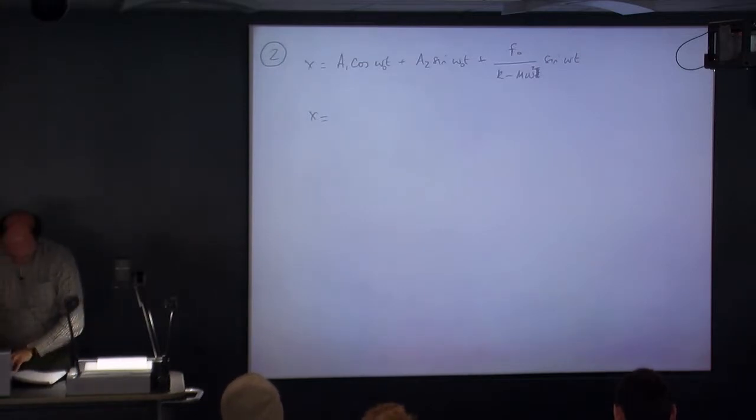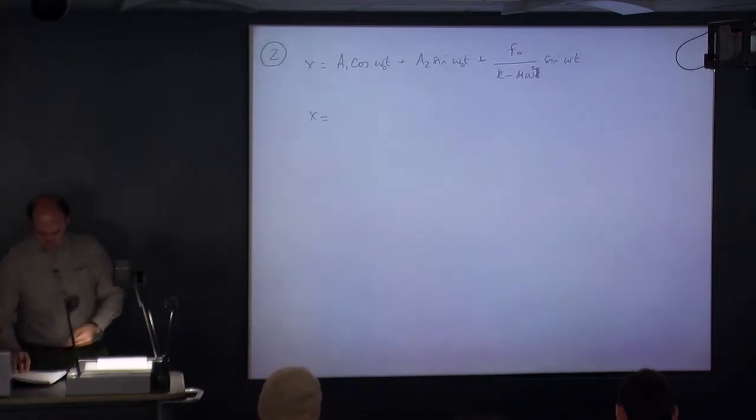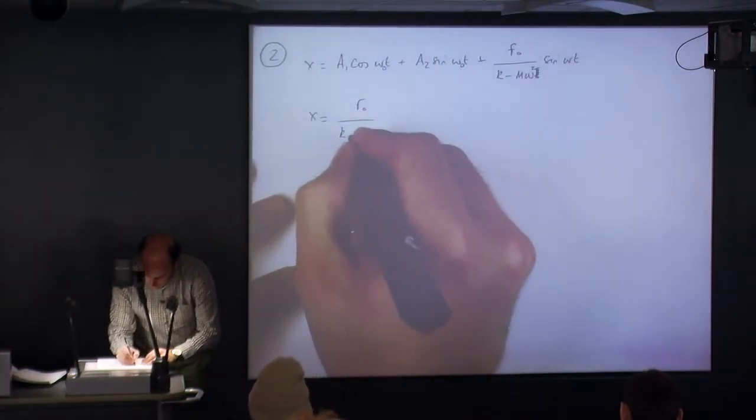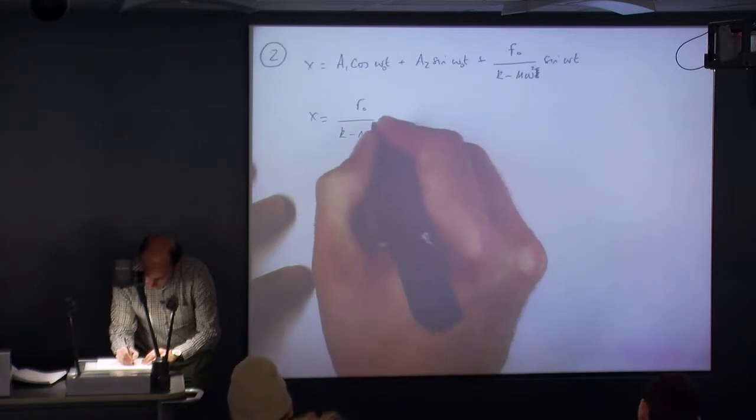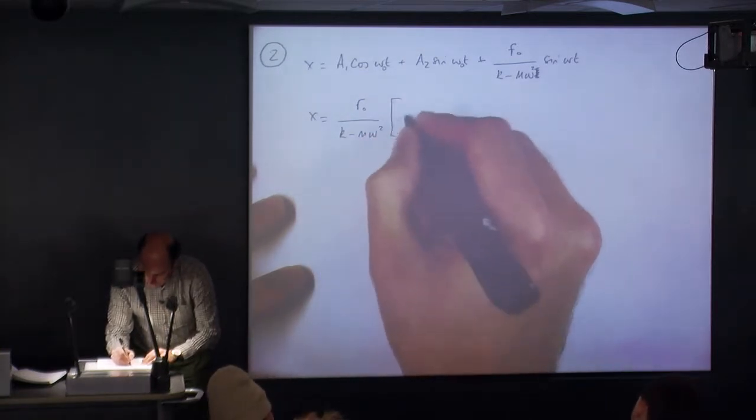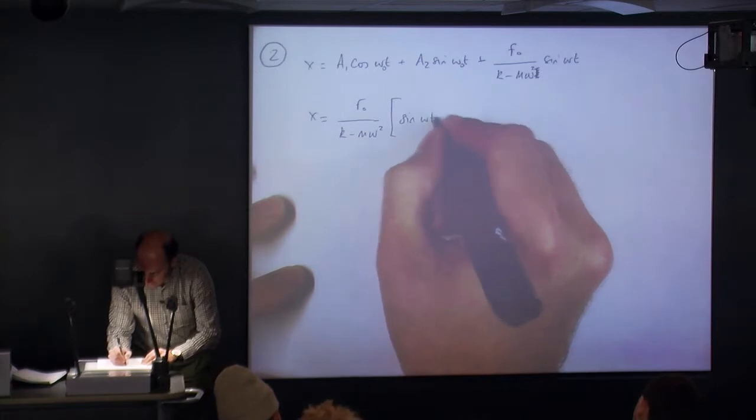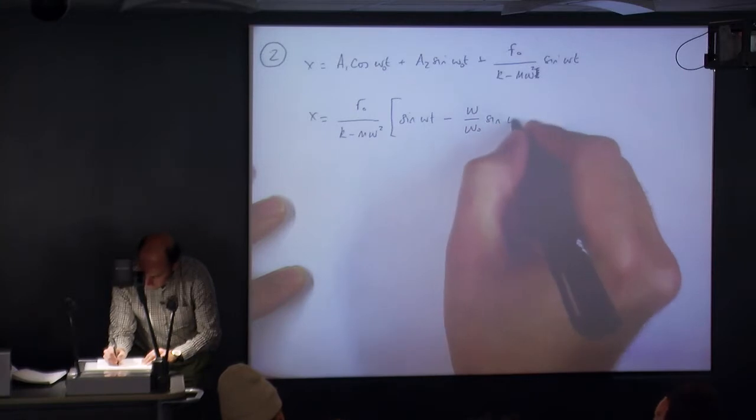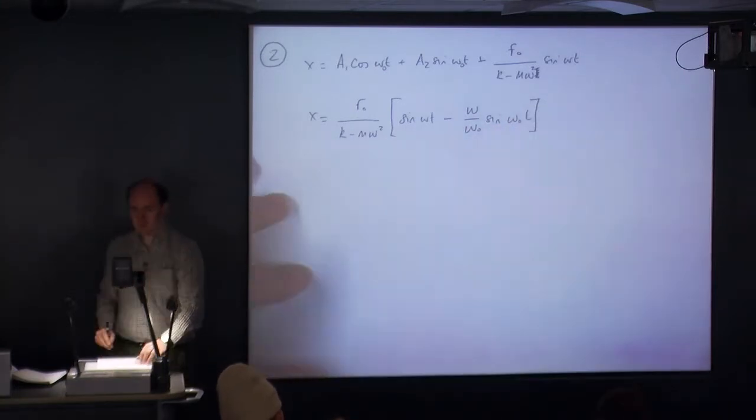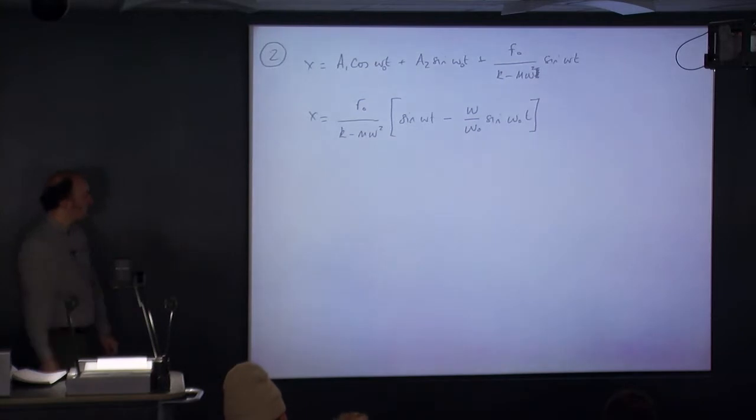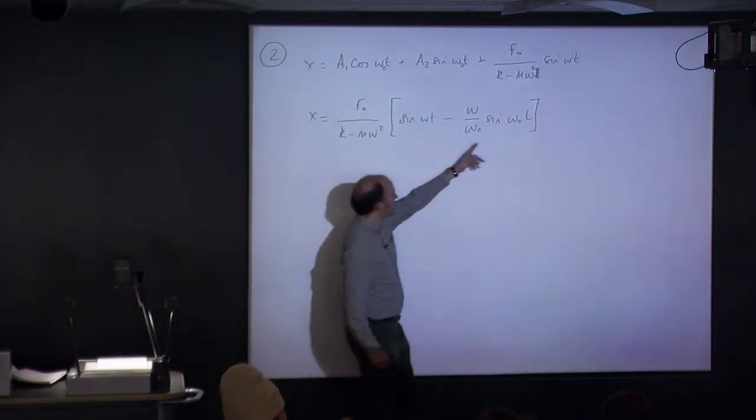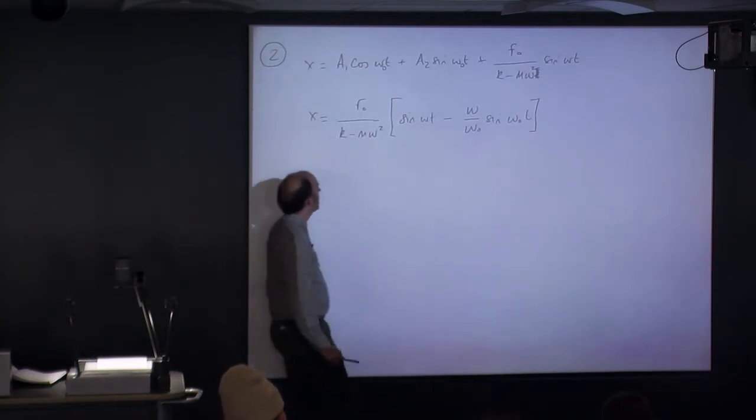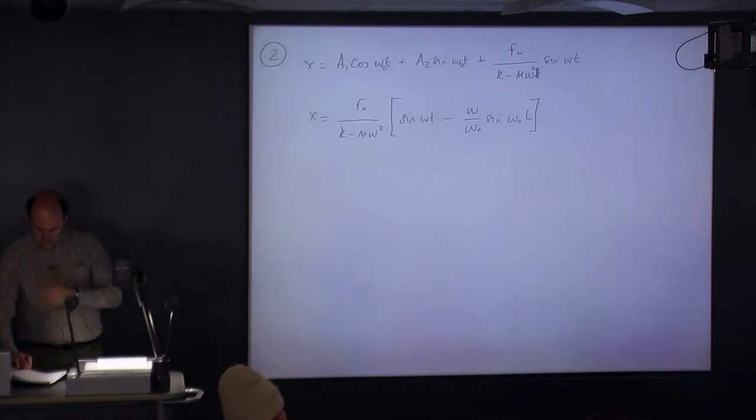But the solution is on the last page of your tutorial sheet and you end up getting f0 upon k minus m omega squared. Then you end up with sine omega t minus omega upon omega 0 sine omega 0 t. This is the thing about beating. Like I said, if these two things are very close together, you end up with these cancelling each other out or reinforcing each other. So there's our equation.